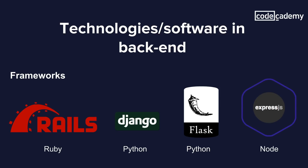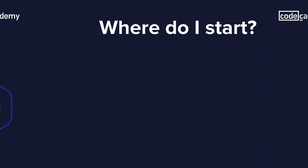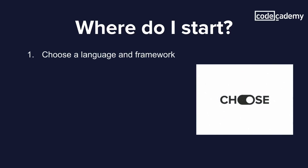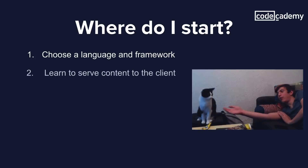If you're interested in learning backend development, how do you get started? There are many paths to the same destination, but here is one simple progression. First, choose a language and a framework. If you're already familiar with JavaScript from front-end development, it might make sense to pick JavaScript and Express. If you're unfamiliar with programming, it makes more sense to start with a beginner-friendly language like Ruby or Python. After you've picked a language and framework and become familiar with it, start learning how to serve simple content to the client.